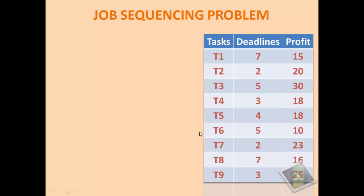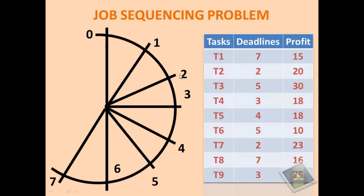Let's get back to the given problem. Here the maximum deadline shown is 7. You can see the deadline column the maximum level is 7. So consider the deadline in a form of clock like structure as shown here. Here we have plotted from 0 to 7 in a clock like structure which will be used to locate the task.